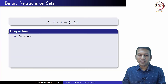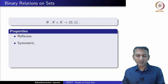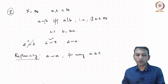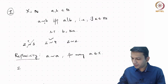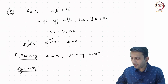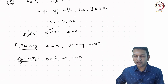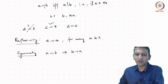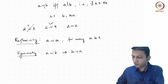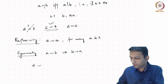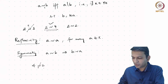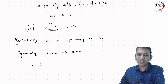The next property is symmetry. What does symmetry mean? It means if a is related to b, then b is also related to a. We can ask: is this true of the divisibility relation? We know that 2 is related to 4. However, is 4 related to 2? Clearly not, since 4 does not divide 2. So the divisibility relation is not symmetric.